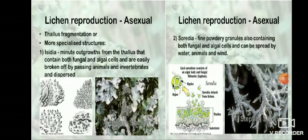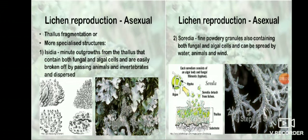Lichens can reproduce both asexually and sexually. In asexual reproduction, there are two modes: isidia, which are minute outgrowths from the thallus containing both fungal and algal cells, easily broken off by passing animals and dispersed; and soredia, which are fine powdery granules also containing both fungal and algal cells, spread by water, animals, and wind.